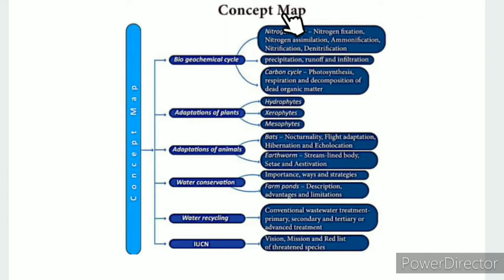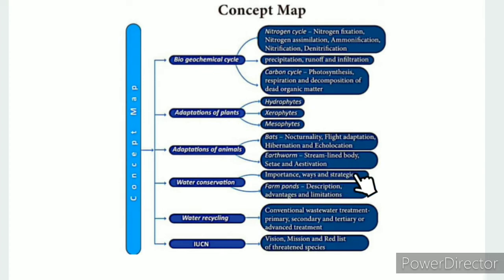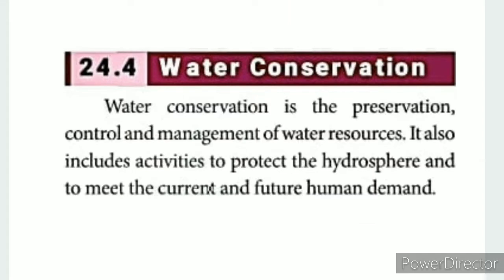Concept map. This is water conservation — the importance of water conservation, how you can do it, and the strategies. That includes farm ponds: their description, advantages, and limitations.